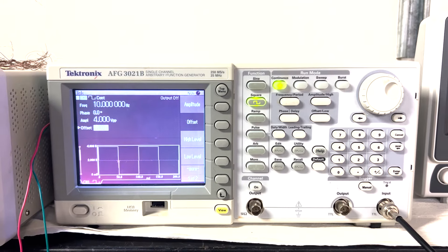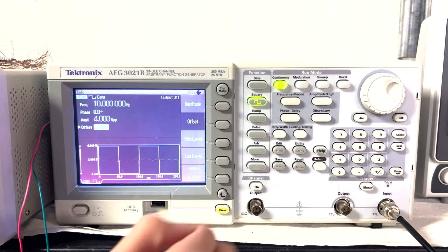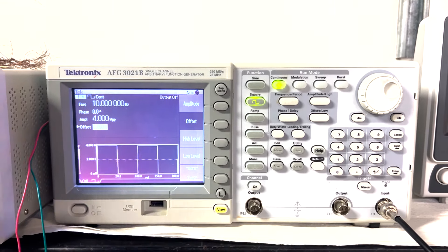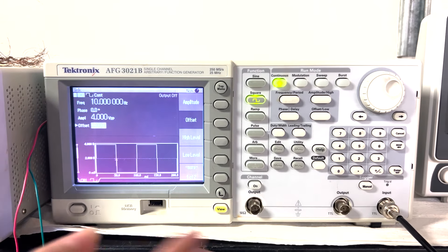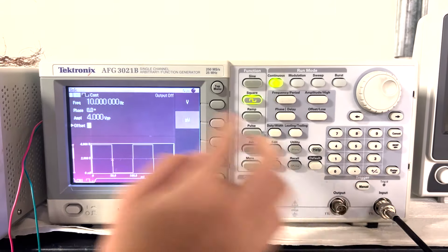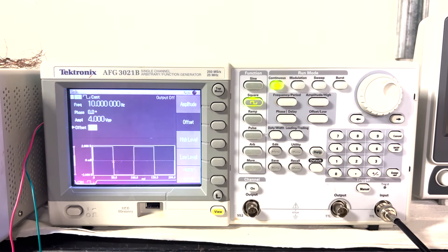Then you can also change the phase the same way, which will just move the function to the right or to the left, according to what you put. And well, now I'm just going to change the offset to zero volts, which is what I want.